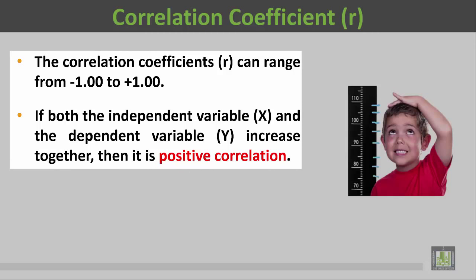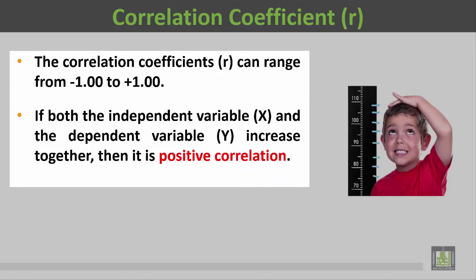If both the independent variable X and the dependent variable Y increase together, then it is a positive correlation — meaning the two variables change in the same direction.